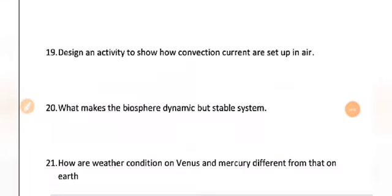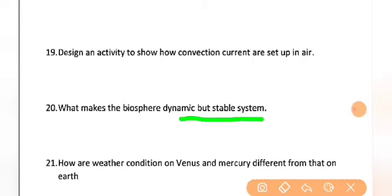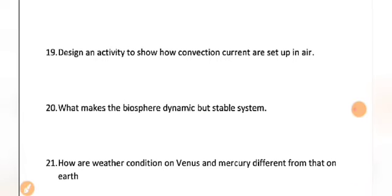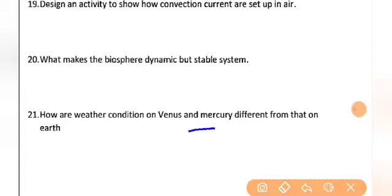Now, question number 21. This is the series of short answer type questions. The very short answer type question is over. Now, the last question of the previous video lecture was: what makes the biosphere dynamic but stable? Biospheres of our atmosphere are dynamic because of having continuous formation of organic and inorganic substances — that was covered in the previous video lecture. Now the next question is: how are the weather conditions on Venus and Mercury different from that on Earth?